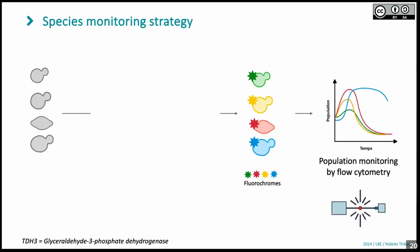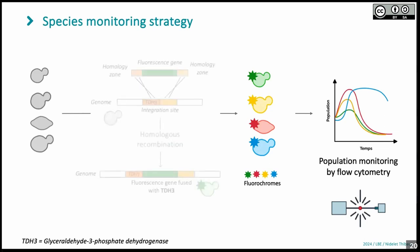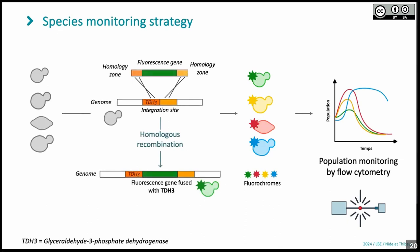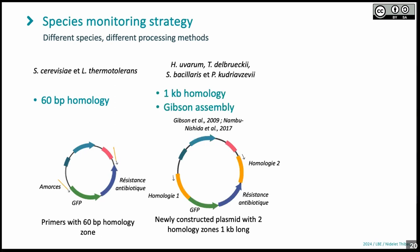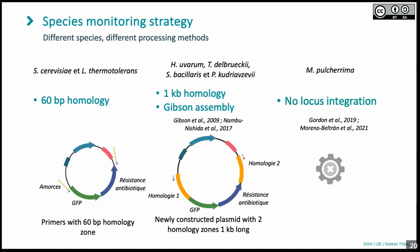To follow the proportions, we chose a flow cytometry approach. It requires more work at the beginning because we have to add fluorescence to each species, but it is simpler afterwards for experiments. We put our fluorescence genes combined with the TDH3 gene, which is expressed throughout fermentation. We did this modification for all species. For Lachancea thermotolerans and Saccharomyces cerevisiae, it was straightforward with 60 bases of homology. But for other species it was far more difficult — we needed 1,000 bases of homology. And for Starmerella bacillaris and Metschnikowia pulcherrima, we were not able to transform them at all; almost everybody who has tried has failed until now.